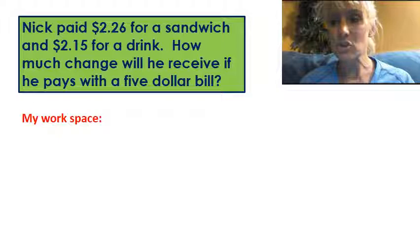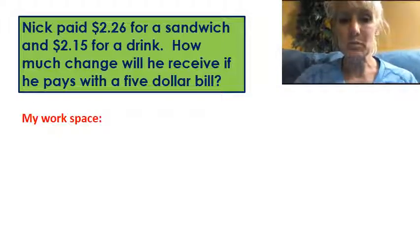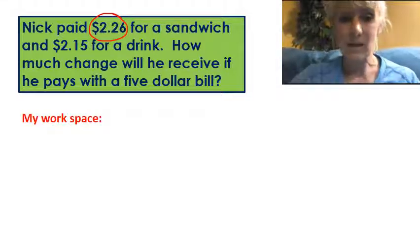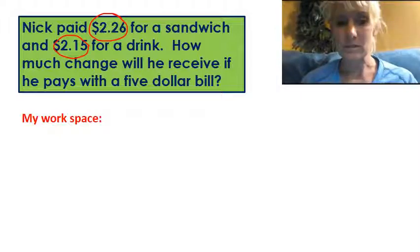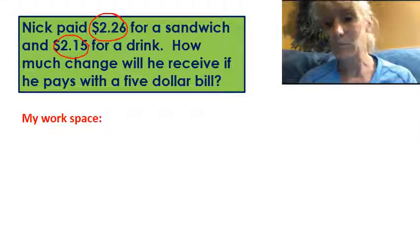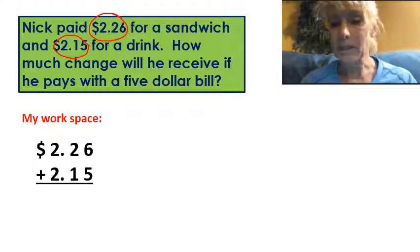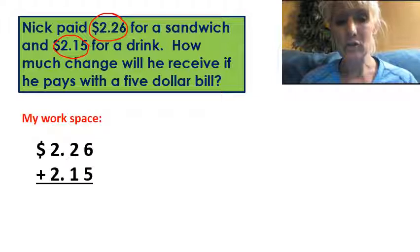First thing I want to do is circle important information that's going to help me when I set up this problem. I see that he paid $2.26 for a sandwich — that's important. I see that he paid $2.15 for a drink. I'm going to need to add both of those up in order to find out what my total is. Right here I've set it up: $2.26 plus $2.15.